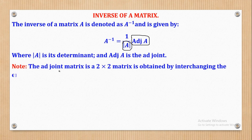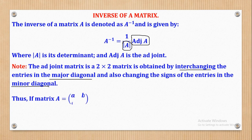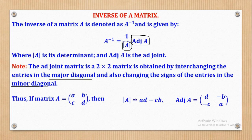The adjoint of a 2 by 2 matrix is obtained by interchanging the entries in the major diagonal and also changing the signs of the entries in the minor diagonal. For example, if I have a matrix A which is A, B, C, D, the determinant is the product of the entries in the major diagonal minus the product of entries in the minor diagonal.